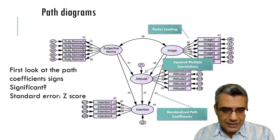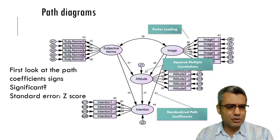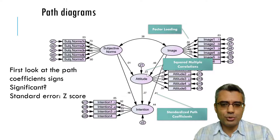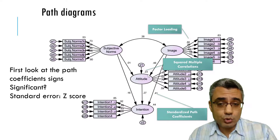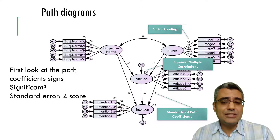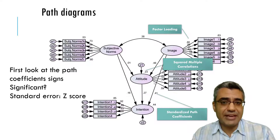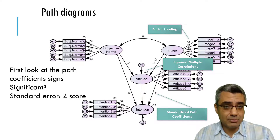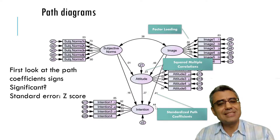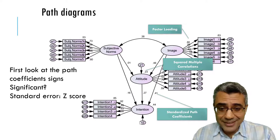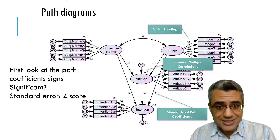You also see values like 0.44 and 0.23 at the corners of certain constructs — these are called squared multiple correlations, which is the R-squared in structural equation modeling. For example, 44% means 44% of the variance of intention is explained by the three factors in the model, and 23% means 23% of the variance of attitude is explained by the two factors predicting it. If intention has an R-squared of 44%, then 56% of its variance is not explained by the model, which is why we place an error term there — representing that 56%.